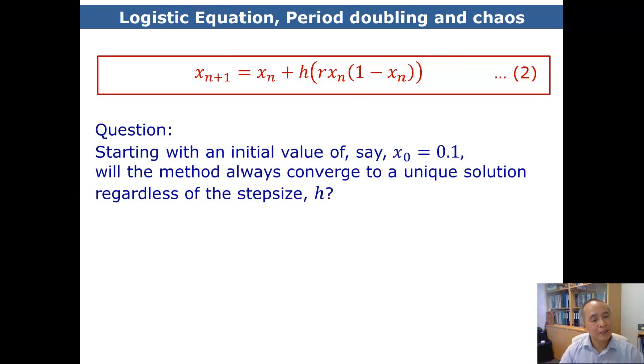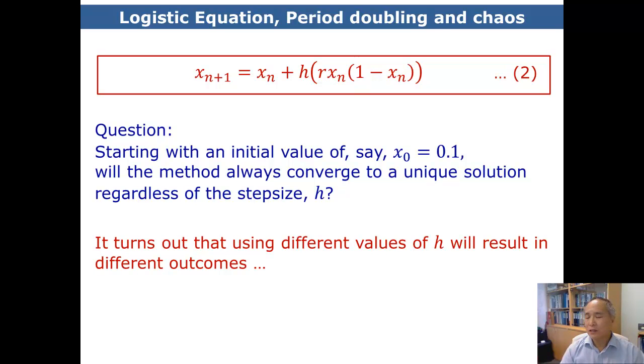Now, the question here is that suppose we start with an initial value of x_0. Will the method always give us a unique solution, regardless of the size of h? It turns out that using different values of h, we may get different outcomes.